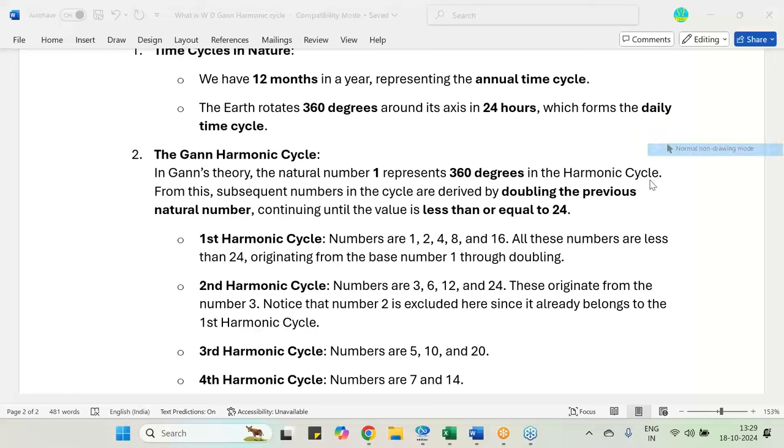Now my second harmonic cycle will be starting with number 3. Number 3 doubling it to 6, again doubling it to 12, again doubling it to 24. Beyond 24 it will be above 24 number, so I will be stopping here. The second harmonic cycle is 3, 6, 12, and 24. So 3 represents 1 quarter of a year, 6 is half a year, 12 again is 1 year. You can split into the days also, hours also: 1 quarter of a day, half a day, so full day.